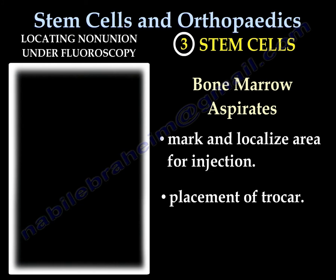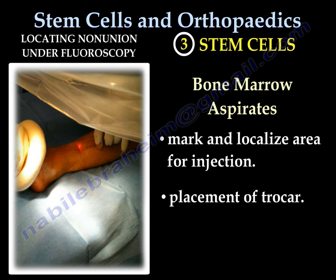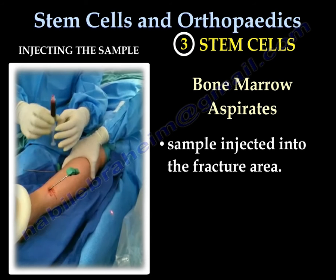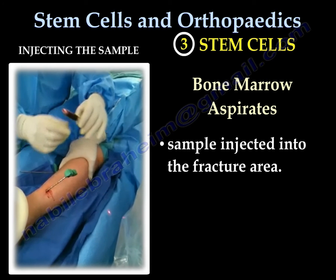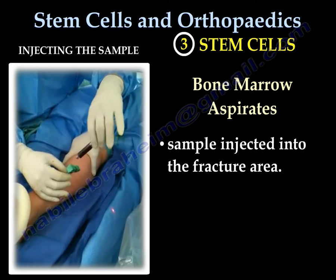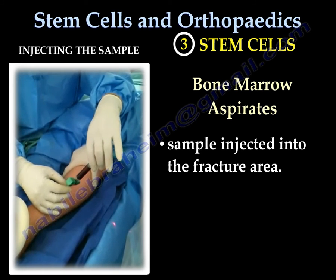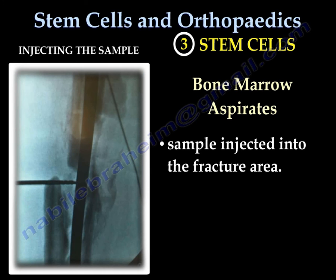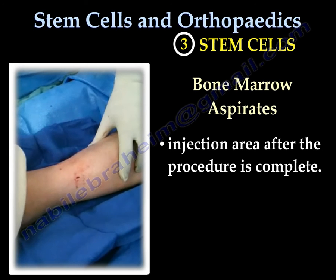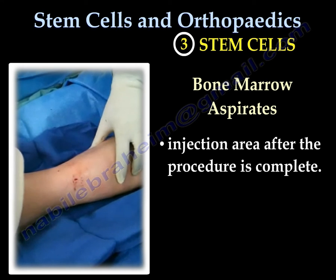We locate the nonunion under fluoroscopy and mark the area for injection. We place a trocar into the nonunion, and the sample is injected into the fracture or nonunion area. You can treat different nonunions in the body, but usually it is the tibia that is most problematic. This is the small site of injection after the procedure is complete.